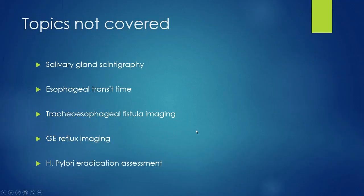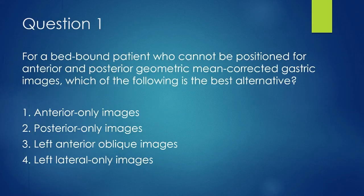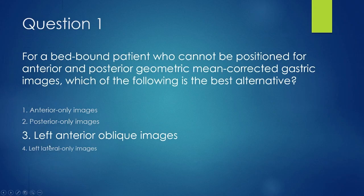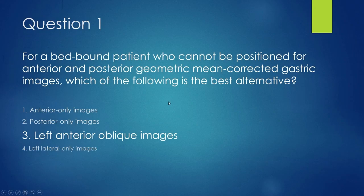Now revisiting the review questions. Question one: for a bed-bound patient who can't be positioned for regular anterior and posterior geometric mean-corrected gastric imaging, which is the best alternative — anterior only, posterior only, left anterior oblique, or left lateral images? The correct answer is left anterior oblique images. If we can only choose one, we shouldn't choose just anterior or posterior alone, since the LAO does a better job as the sole imaging plane to lay out the stomach. With anterior- or posterior-only imaging, there will appear to be much larger shifts of activity than truly exist.